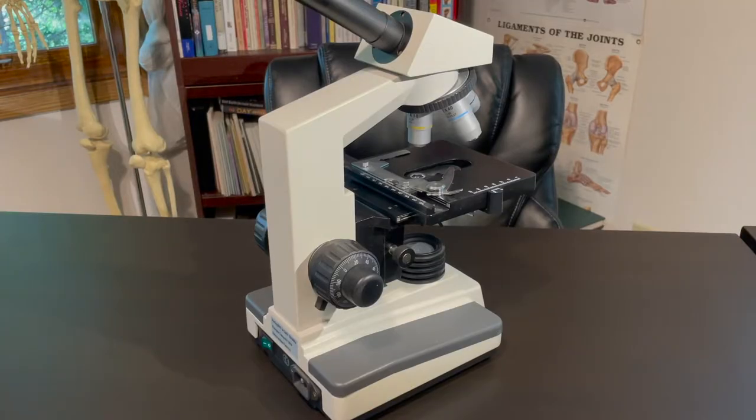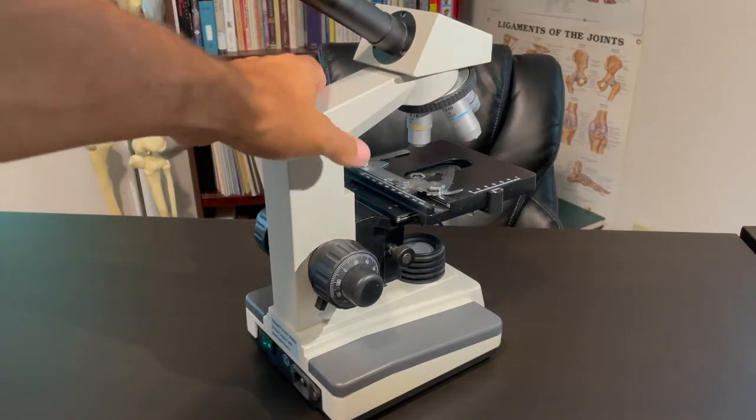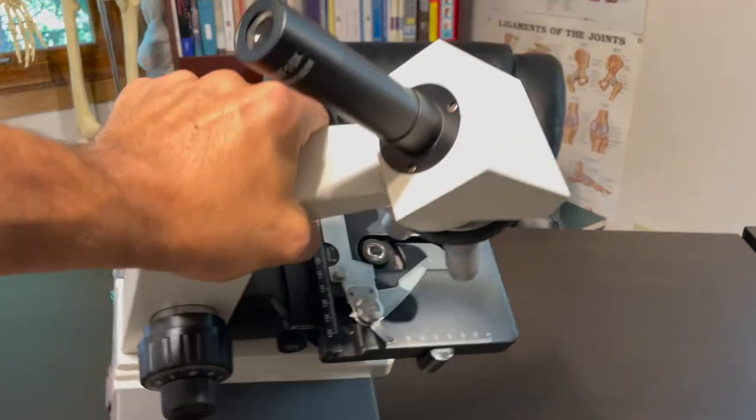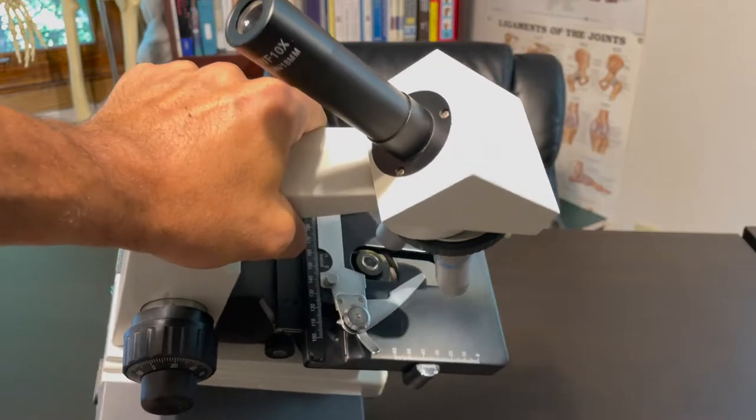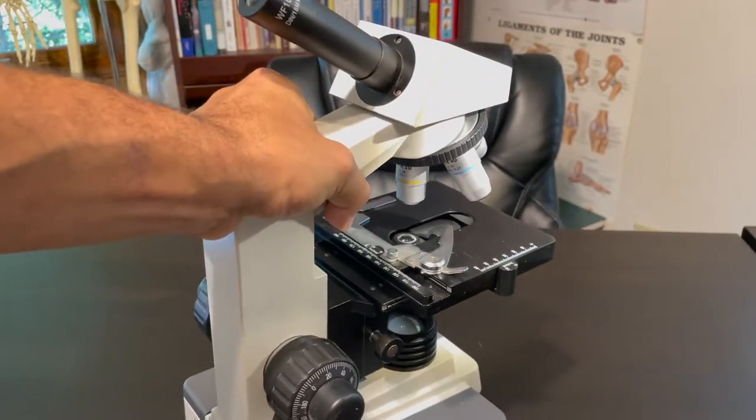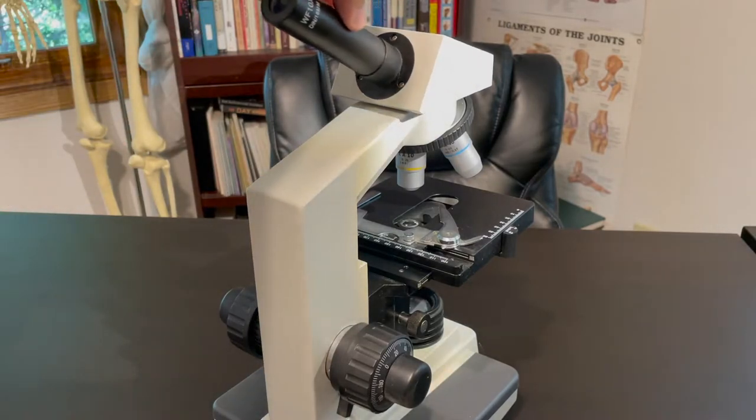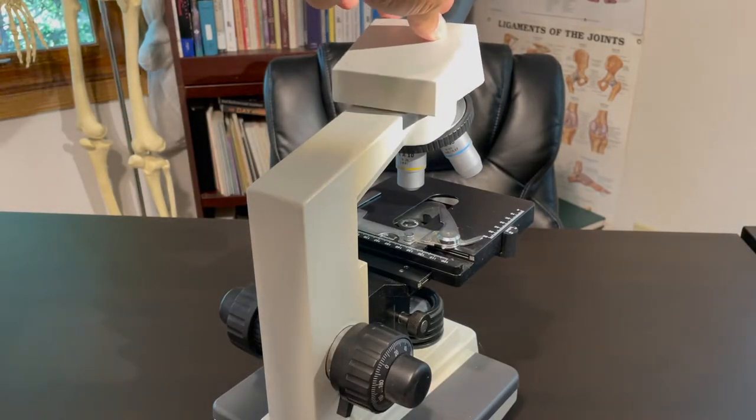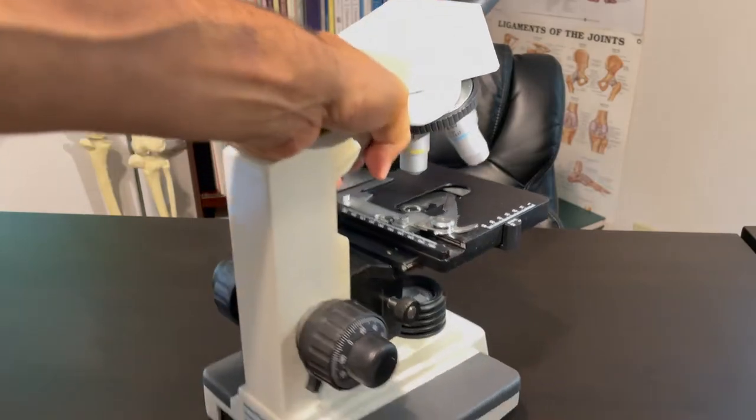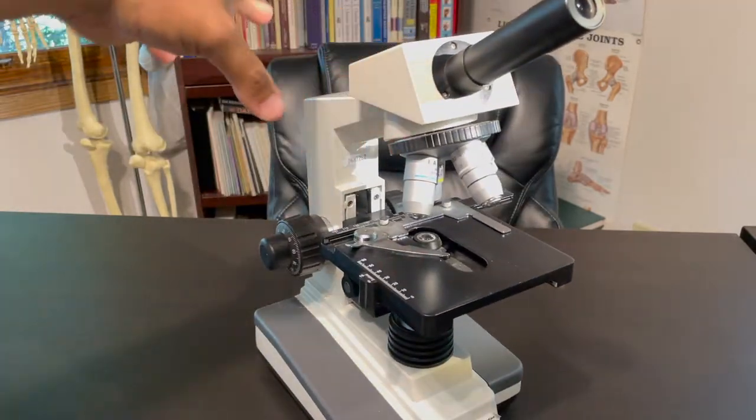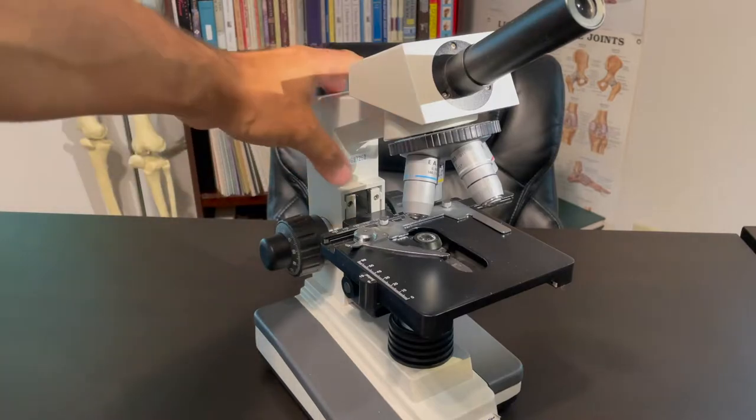Okay, so here we got the microscope. This is a monocular microscope because you look through it using one eye rather than a binocular microscope. You can use it like this, or you can spin this around and use it like this. So this is how we'll do it just so we can see all the rest of the parts here.